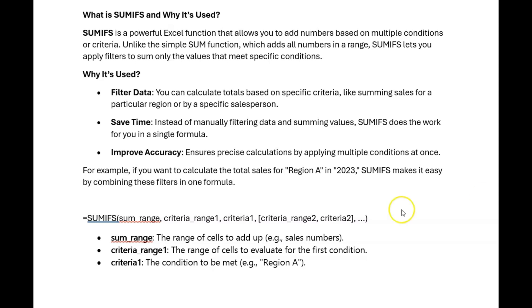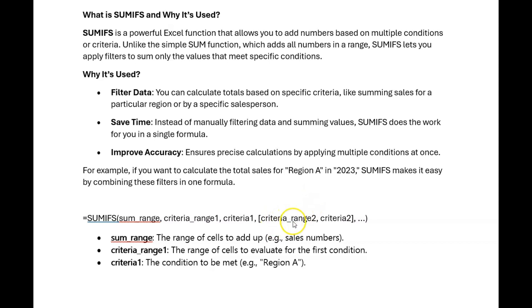Looking at the formula itself, it looks like this: =SUMIFS. First you provide the SUM range — the column of values you want to total, for instance sales. Then criteria range one is the column for your first filter, such as the region column, and criteria one is what you want to pull from that range, such as Region A. You can add multiple criteria: criteria range two, criteria two, criteria range three, criteria three, and so on.